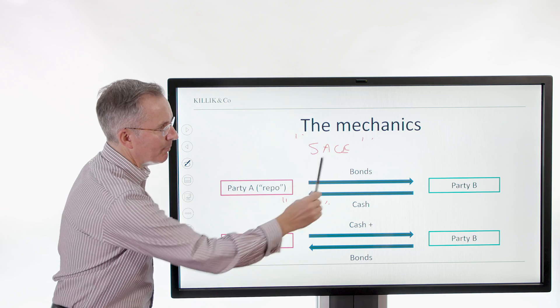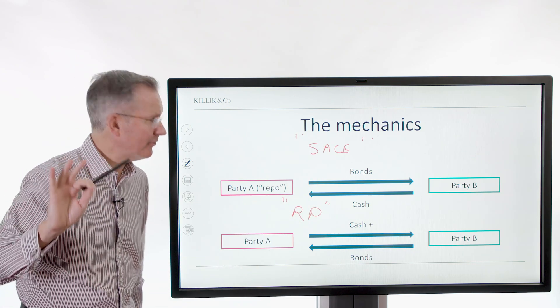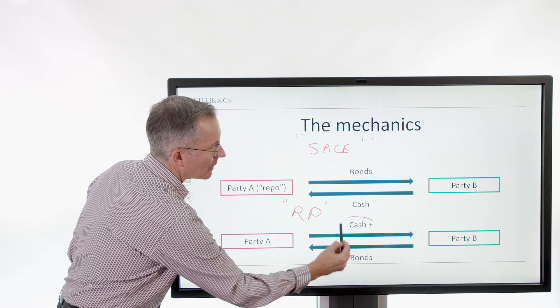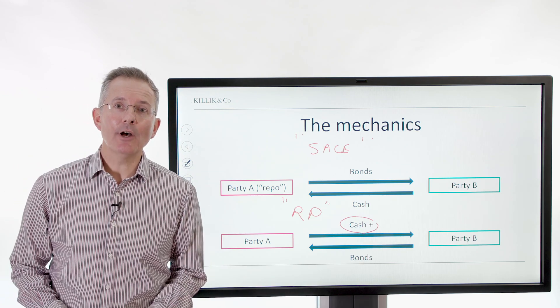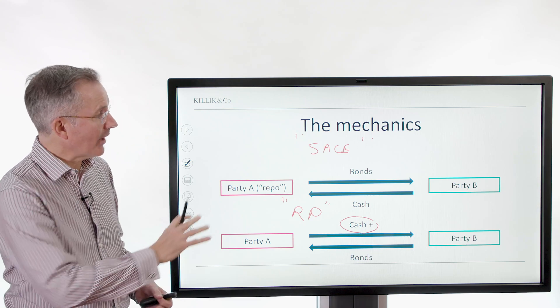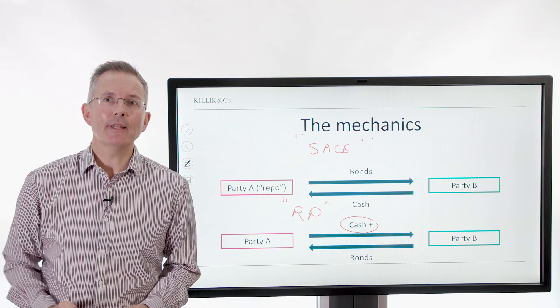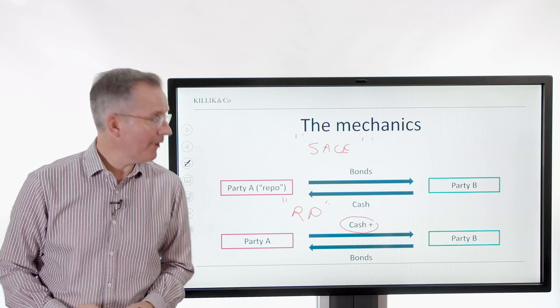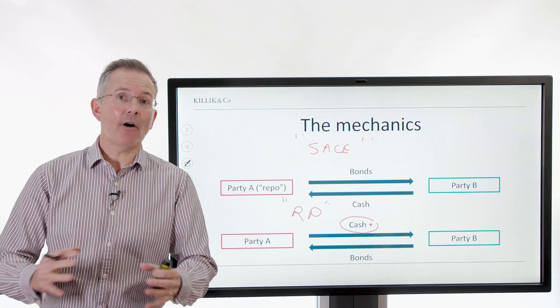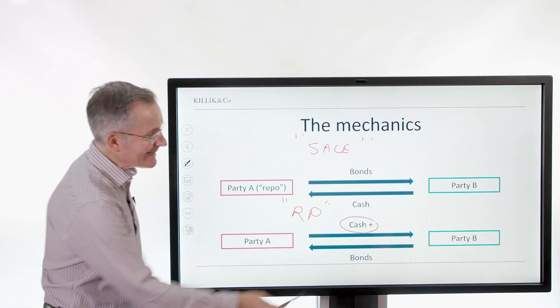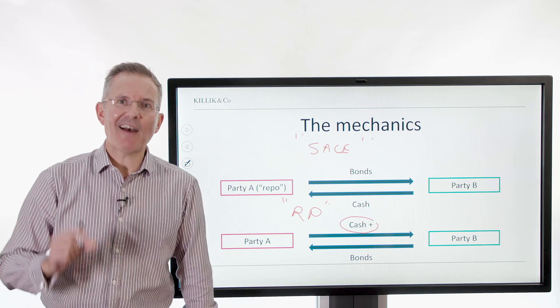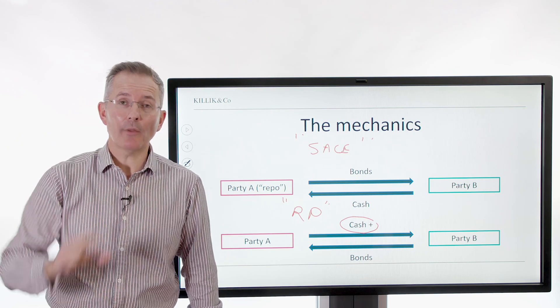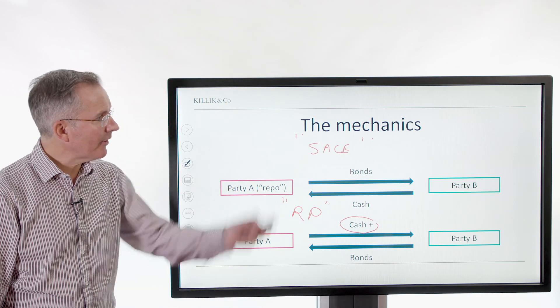What do I mean by that? Party A is effectively used IOUs that it holds maybe a very short-term period just overnight, for example, to borrow cash. When that's unwound, essentially a little bit more cash goes back the other way and the bonds are returned. So it's a way for essentially two parties to solve different liquidity problems. So for party A, it might be a very short-term cash requirement that they're trying to fulfill. For party B, it might be they need those IOUs in the short term.